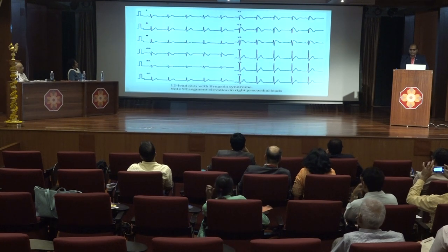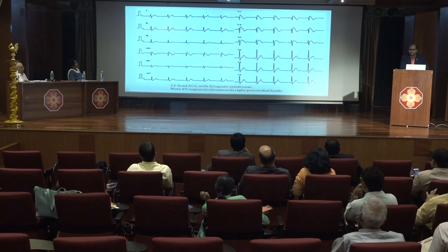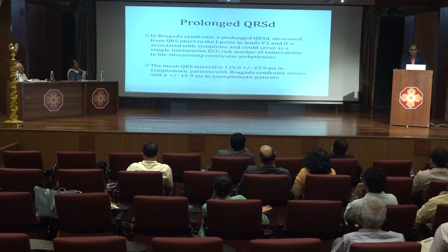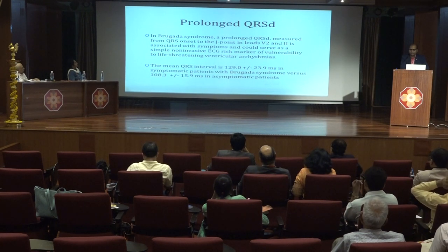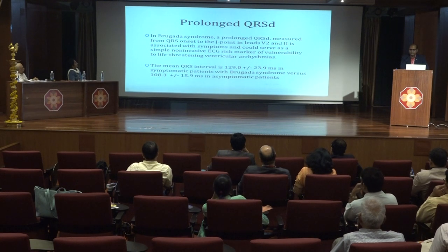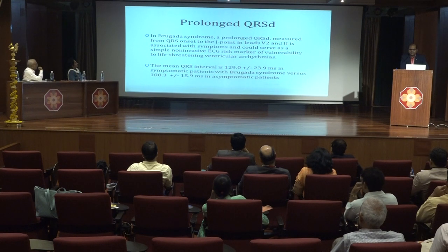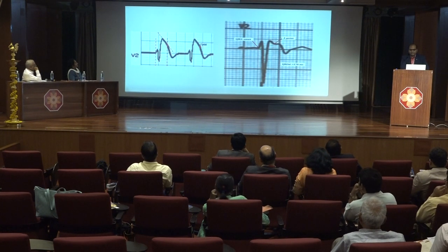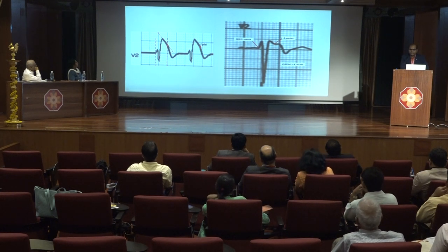This ECG from a type 1 Brugada syndrome patient shows coved ST segment elevation in leads V1, V2, and V3. In symptomatic patients, QRS duration is longer, averaging around 130 milliseconds, compared to asymptomatic patients where it averages around 108 milliseconds. Prolonged QRS duration is a marker for life-threatening ventricular arrhythmia in Brugada syndrome. QRS duration is measured from the start of the Q wave to the J point.